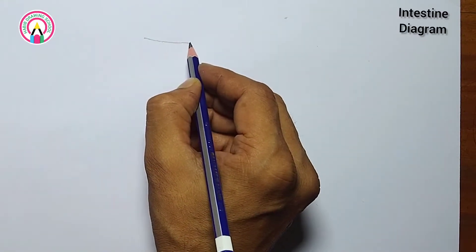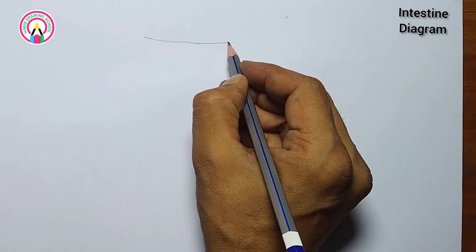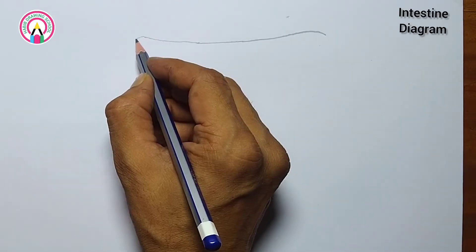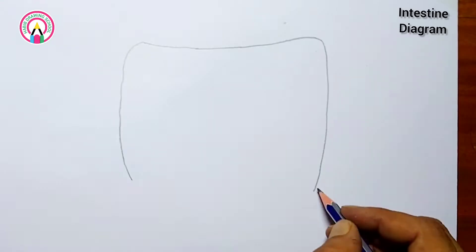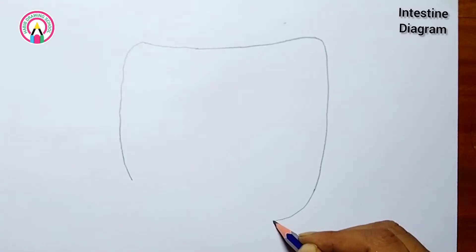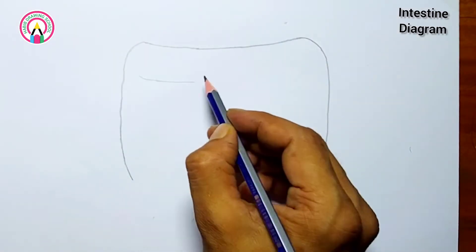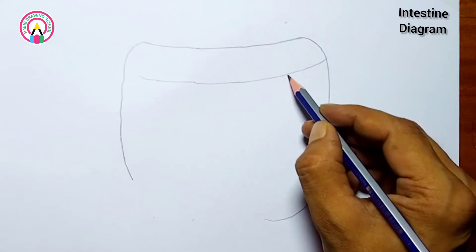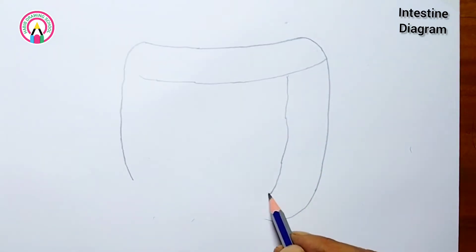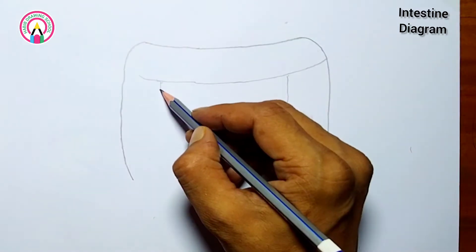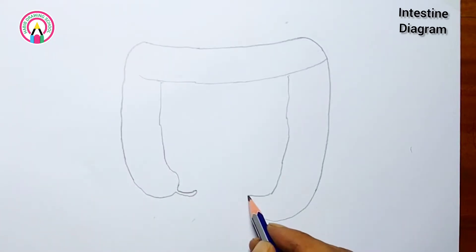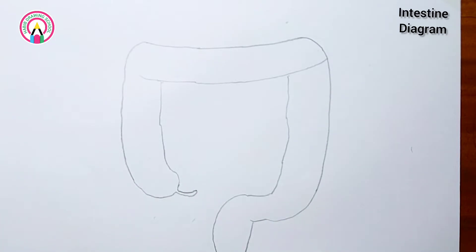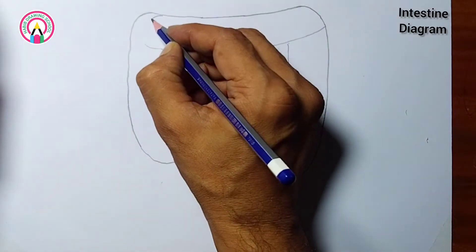Hello friends, welcome to Habib Drawing School. Today I will discuss how to draw a large intestine diagram easily, and what is the large intestine and its function. The large intestine, also known as the large bowel or colon, is a crucial part of the digestive system. Here's an overview.